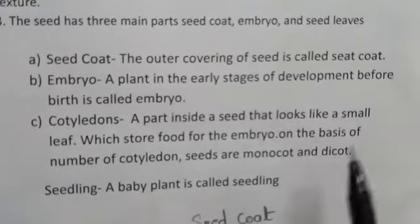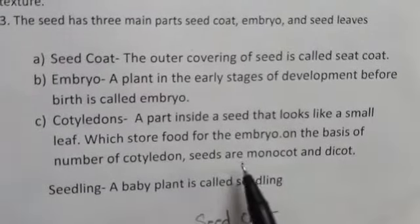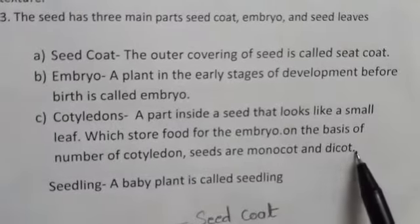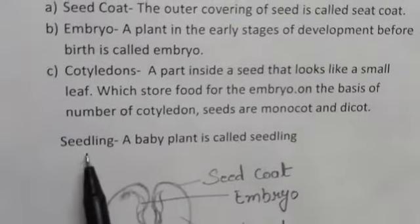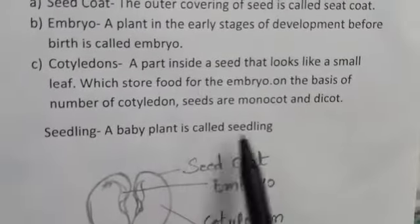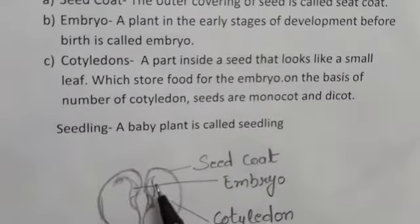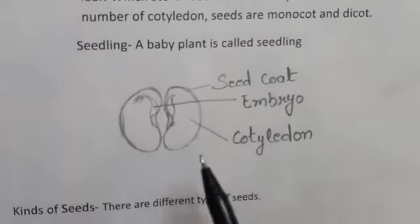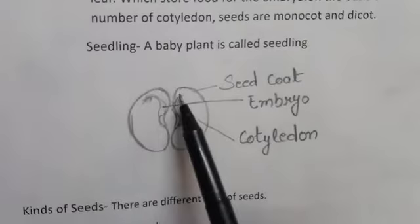Cotyledons: a part inside a seed that looks like a small leaf and stores food for the embryo is called a cotyledon. On the basis of the number of cotyledons, seeds are monocot and dicot. A baby plant is called a seedling.